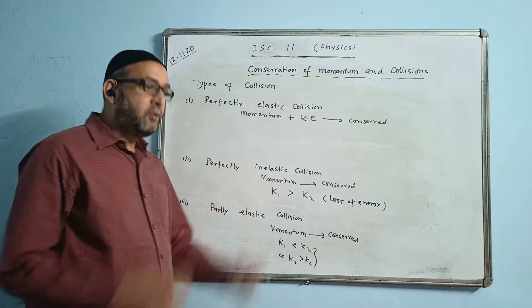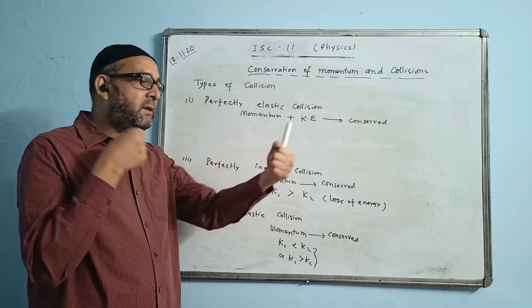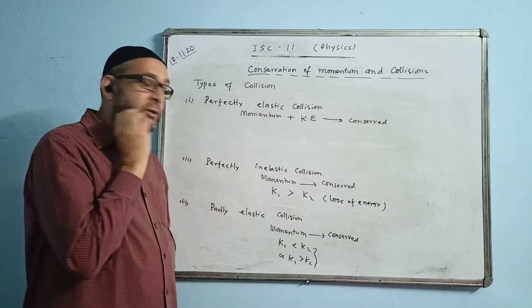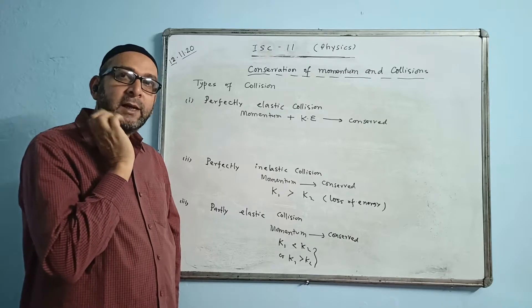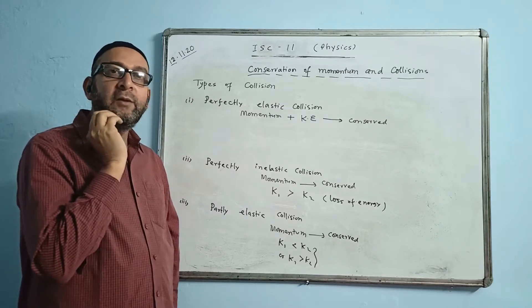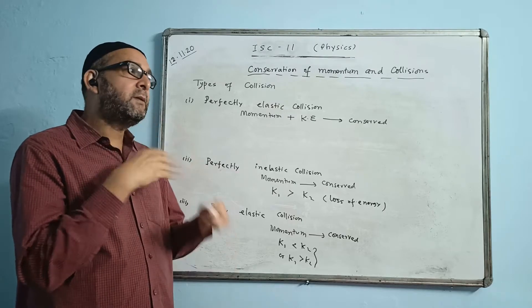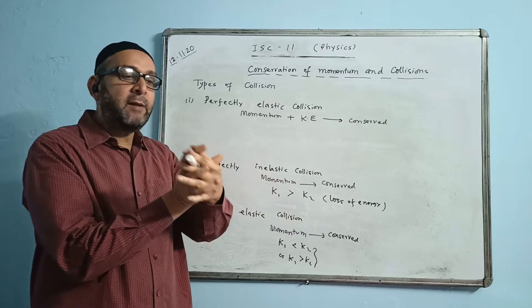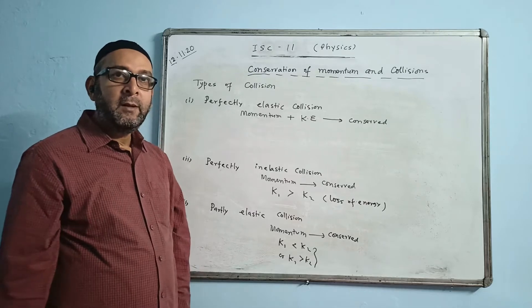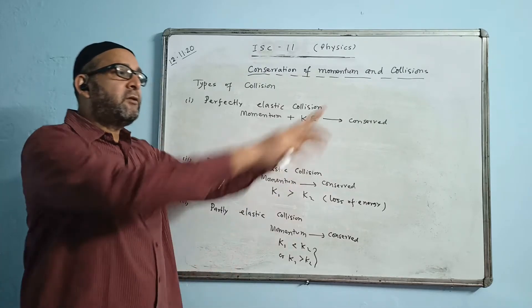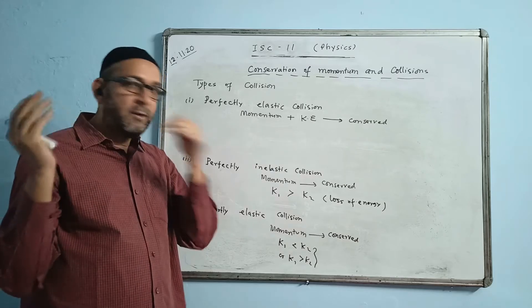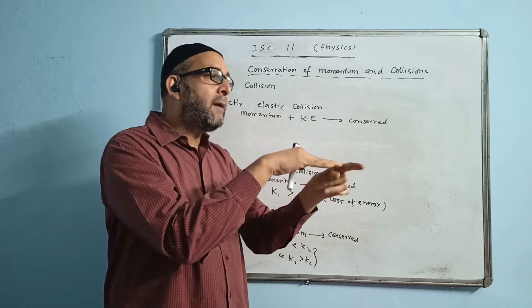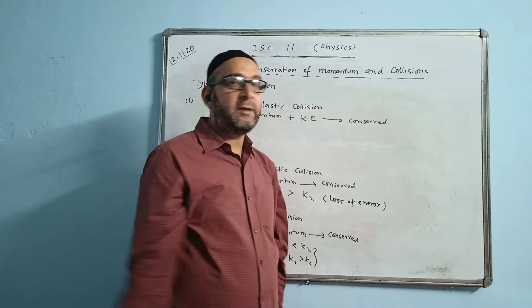In the second type of collision — perfectly inelastic — the two bodies after collision will be sticking together and move with a common velocity. The two bodies coalesce with each other, meaning they combine and move with the same velocity. For example, a bike hitting a trolley from behind, and then both the trolley and the bike move together in the same direction with the same velocity.